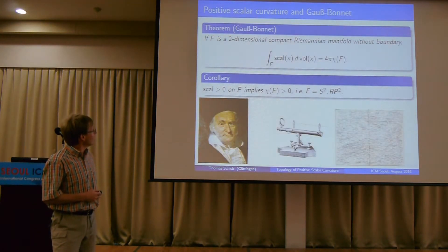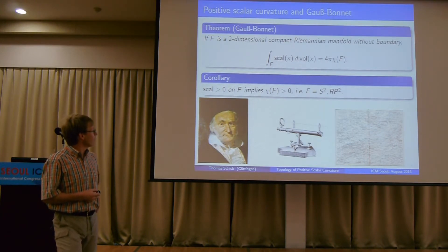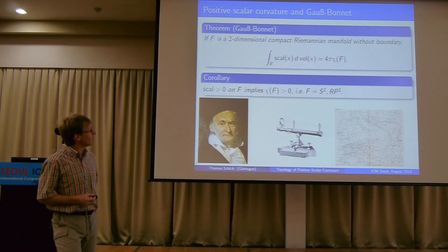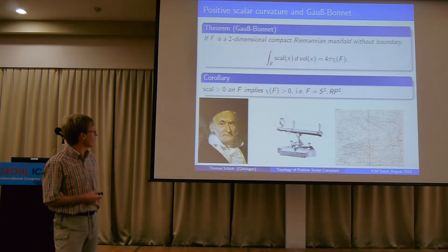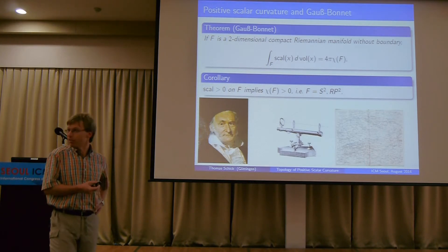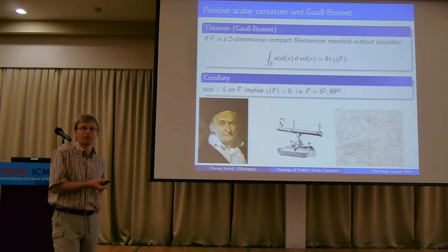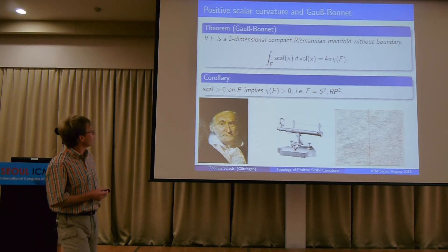Going back to Gauss, who indeed studied the curvature of surfaces, we go back to the very first section of Grönschel's work. He was actually interested in this because he was surveying the Earth and making maps — not of Westphalia but of Hanover. It's important to understand curvature in such situations because that is obviously something difficult to take into account when measuring and making maps of the Earth.